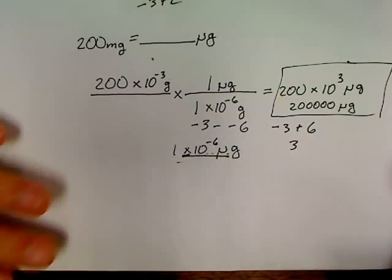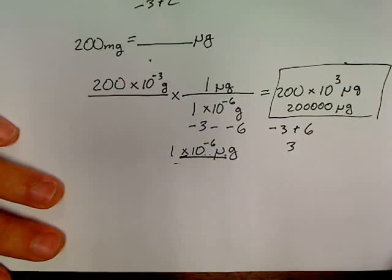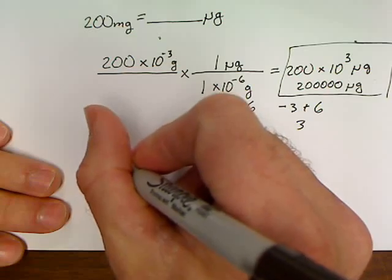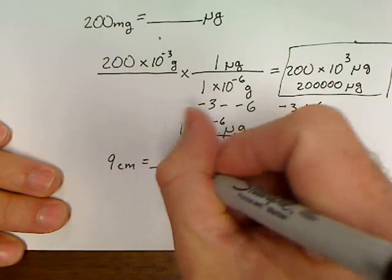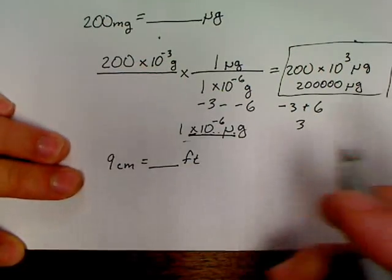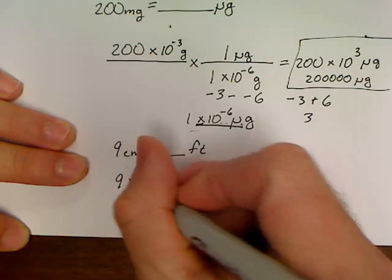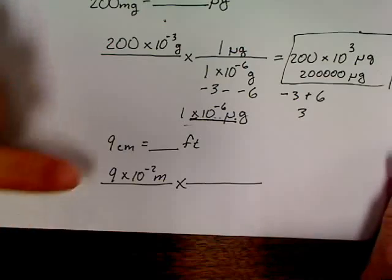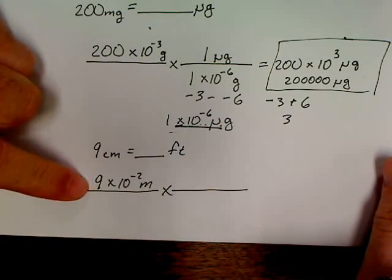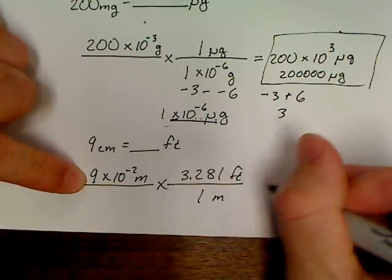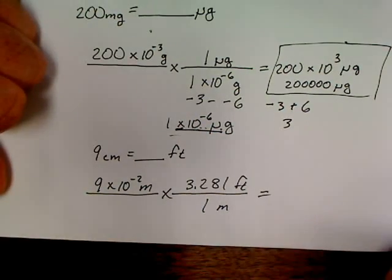What if we were doing centimeters to feet? Could this same use of stuff make that easier? Say we had 9 centimeters. And we wanted to convert that 9 centimeters to feet. Well, yeah. It definitely makes it easier. Because now all we have to do is write down 9 times 10 to the negative 2 meters. Draw our line. Put our next. And look. We've already converted it to meters at this point. So, now all we have to know is 3.281 feet and 1 meter. We've just turned this into a one-step conversion problem at this point.